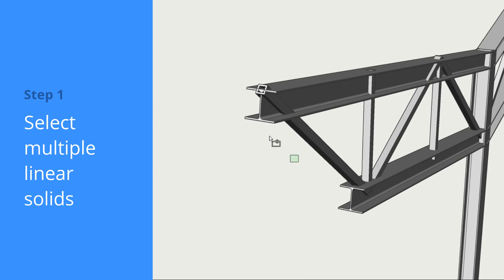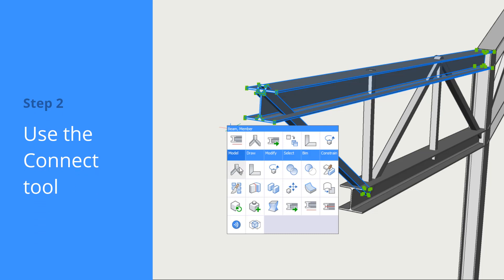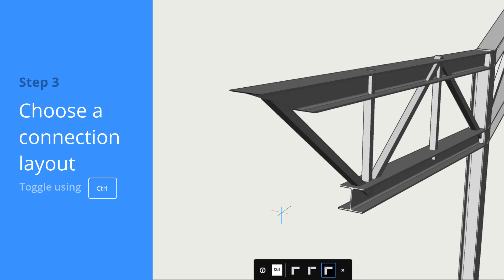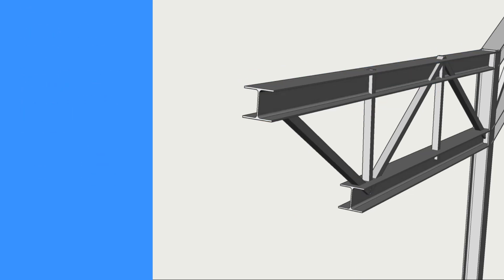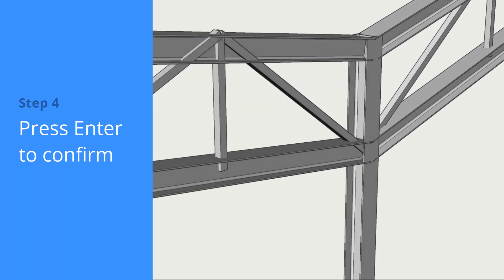Use the Connect tool to customize the connection between linear solids. The tooltip reminds you that you have different connection options. Use Control to cycle through the different options. Press Enter to accept the connection layout you want.